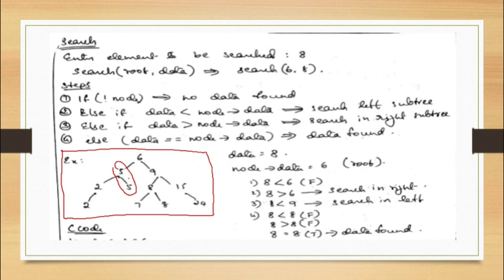We put the second 5 to the right of the first 5, and the second 8 to the right of the first 8. But in the case of 2, there was no left child for 2, so we put the 2 to the left. Both conditions we had seen in our last example. Today, taking the same example, our topic is nothing but how to search a particular element.